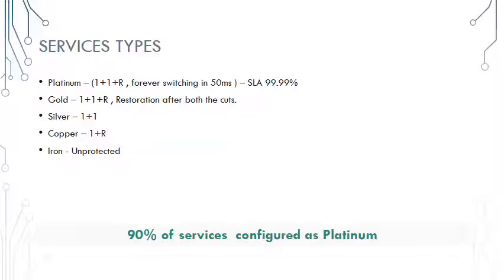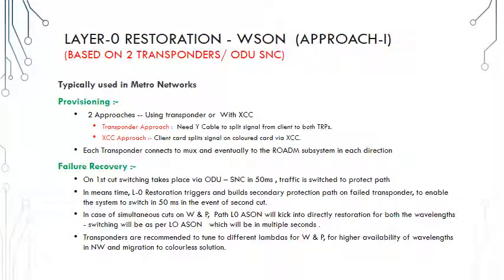In service types, platinum service is 1+1+R, called the always-available service. It is available as long as resources are available and availability is generally very high. This service is very useful where there are a lot of fiber cuts. Gold is a slightly lower standard service. Silver is a standard MSP or SNCP service, which is 1+1 — if one cut happens it will switch within 50 milliseconds, but after a second cut the service will go down. Copper and iron are flavors of unprotected services. In copper, after the first cut, a standby service can be created if resources are available through GMPLS restoration. In places like India where there are many fiber cuts, 90% of services are provisioned as platinum, because of the high chances of dual cuts and generally longer circuit routes due to the geography of the country.